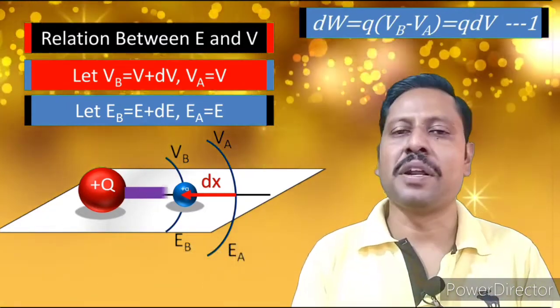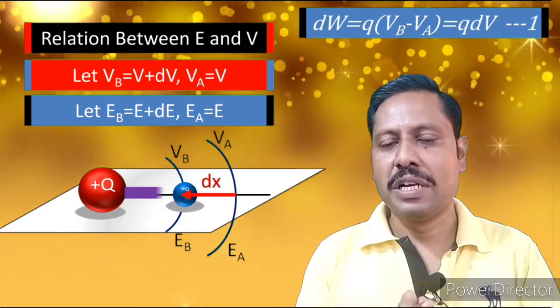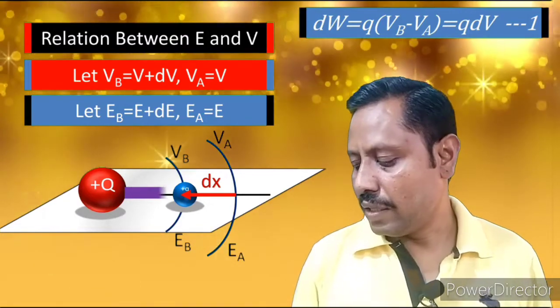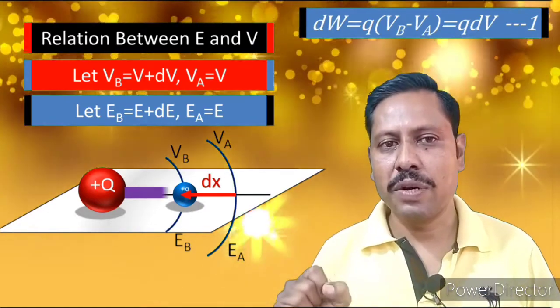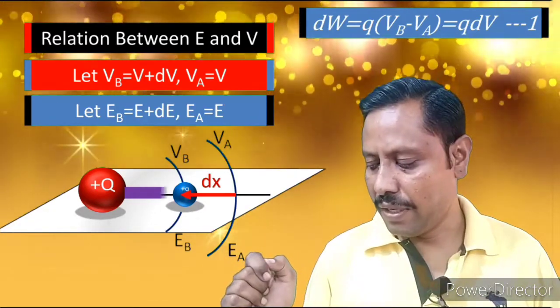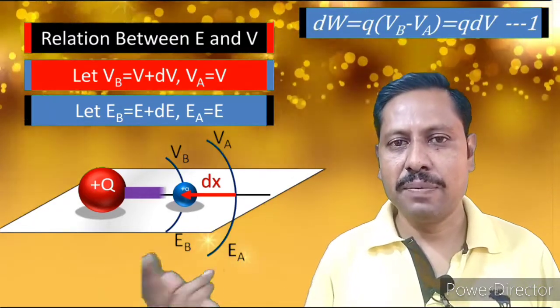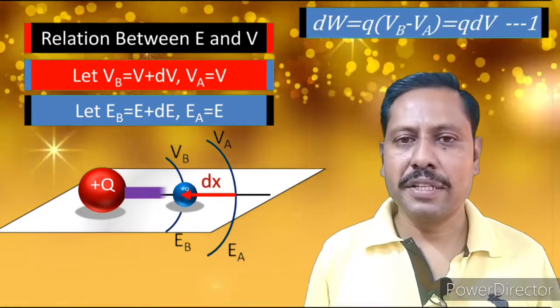Similarly, let us say that the electric field at point B, EB, is equal to E plus DE, and electric field at point A is E. Now, by using this information, we can find the work done. The small work done required to go from B to A is Q into VB minus VA. We are using the concept of electric potential here. So the work done becomes Q into DV because the difference is now DV. VB is V plus DV and VA is simply V, so the difference is DV. Let us say this is equation number one.